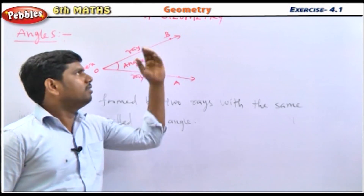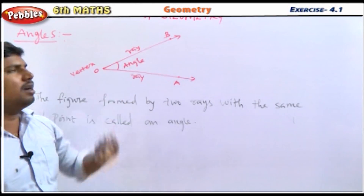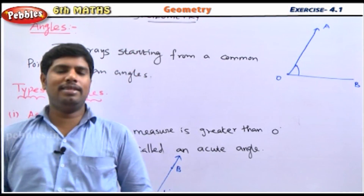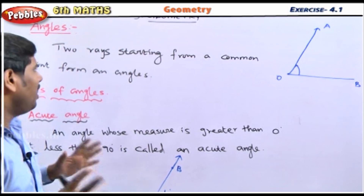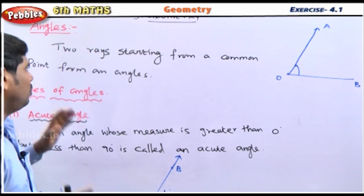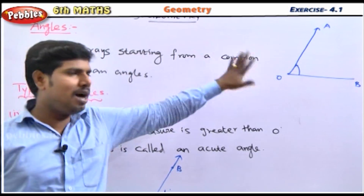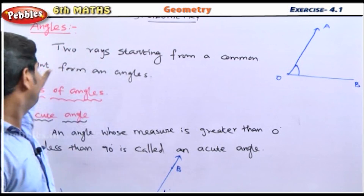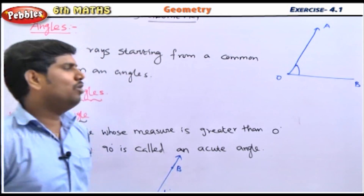Let's look at Term 2 in the 4th chapter of geometry. Angles means two rays starting from a common point form an angle.